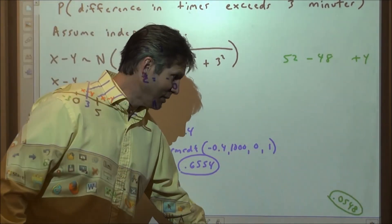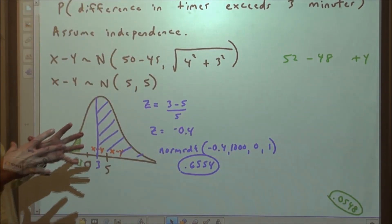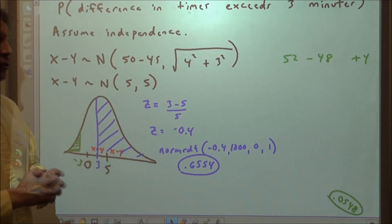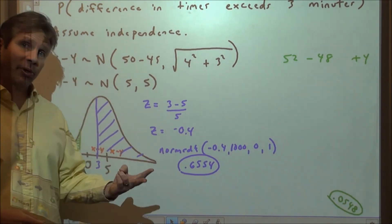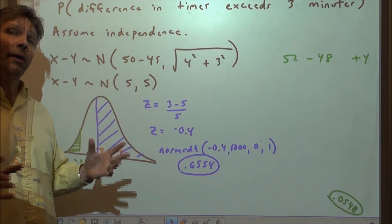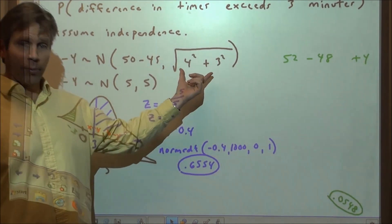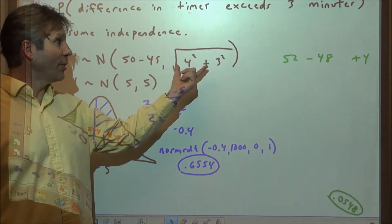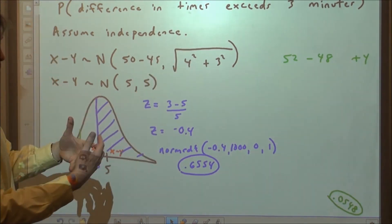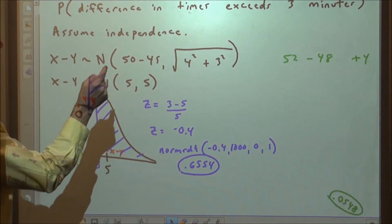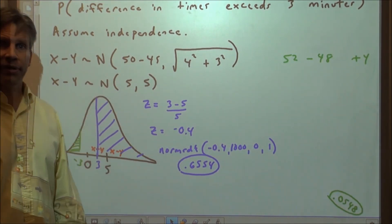Joint distributions for continuous random variables are the foundation for two-sample inference on means and two-sample inference on proportions. If you look at those formulas on the formula sheets, they have you adding the variances together and then taking the square root for the difference of means and difference of proportions. This concept is very important and foundational.